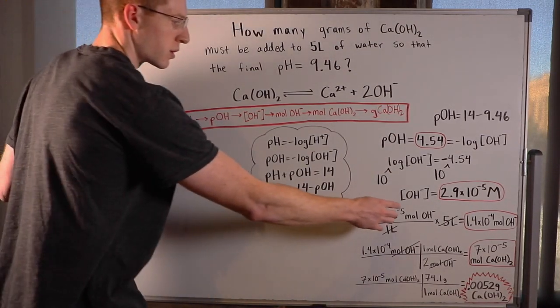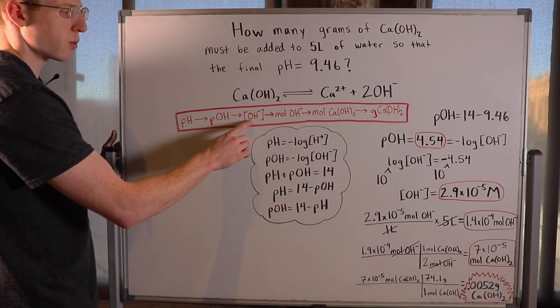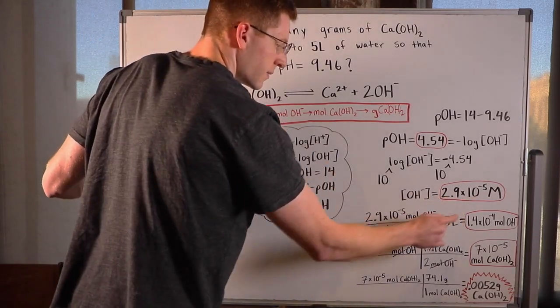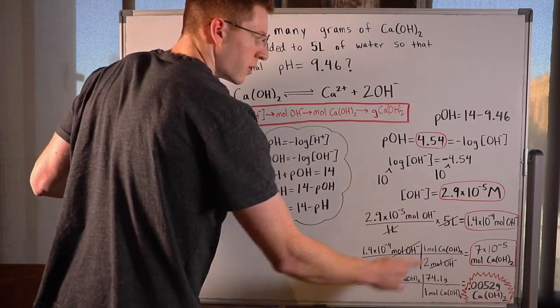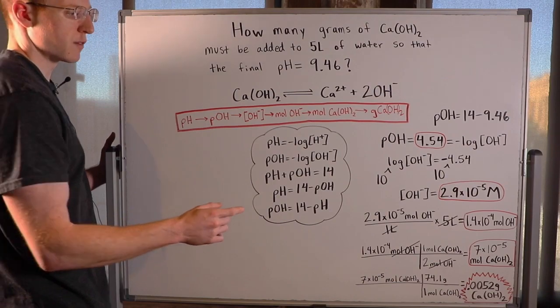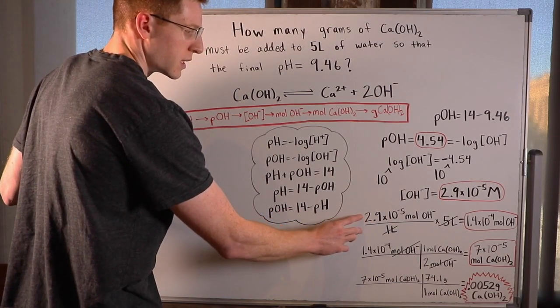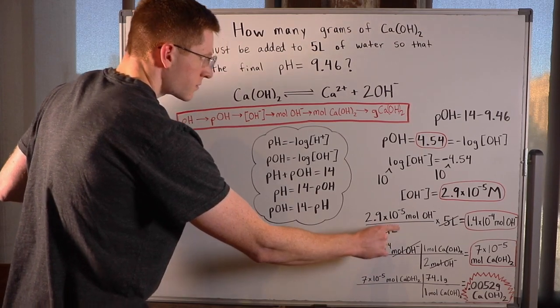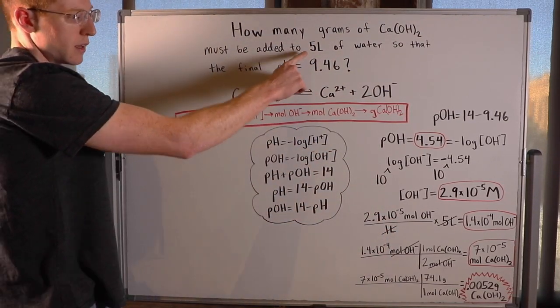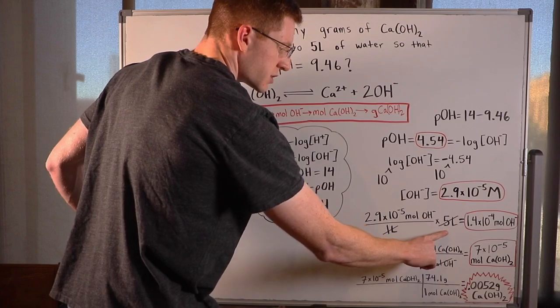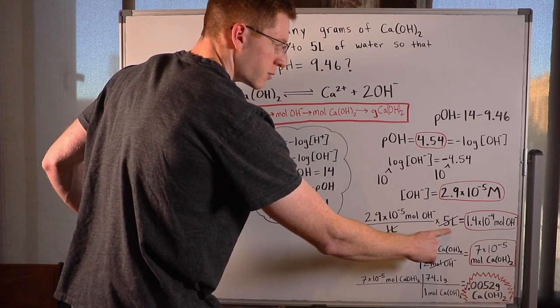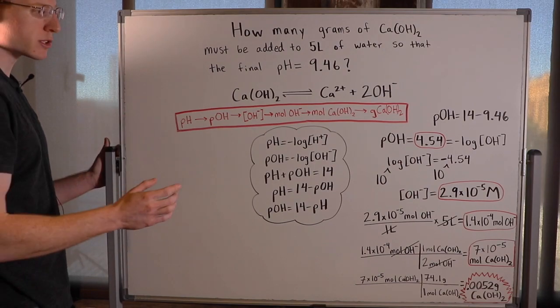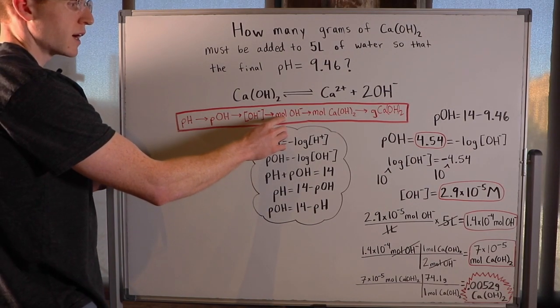So now I'm here, and now I want to get moles of hydroxide. So to get moles of hydroxide from molarity, I know I have 2.9 times 10 to the negative 5 molar, which is 2.9 times 10 to the negative 5 moles of hydroxide per 1 liter. But I have 5 liters, right? So I multiplied by 5 liters to cancel out the volume, and I was left with 1.4 times 10 to the negative 4 moles of hydroxide.